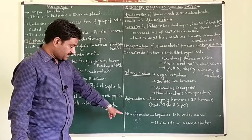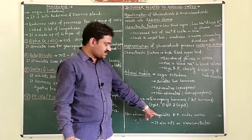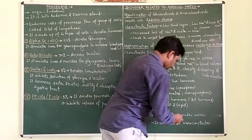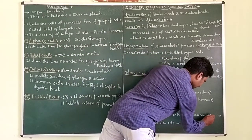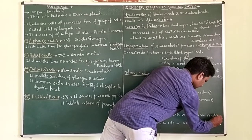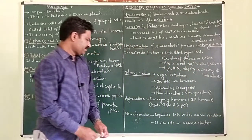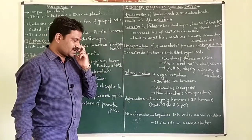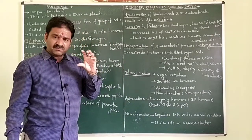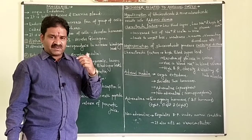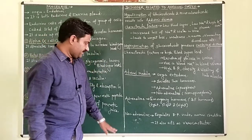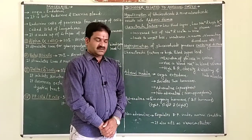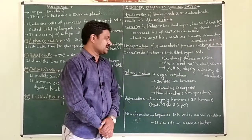Noradrenaline regulates blood pressure under normal conditions. It also acts as a vasoconstrictor, meaning it constricts the blood vessels, which causes blood pressure to increase.